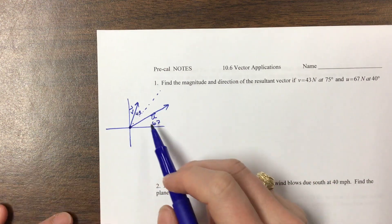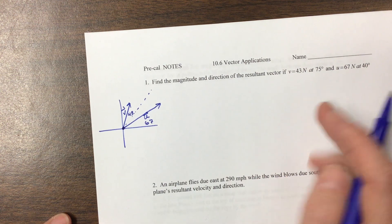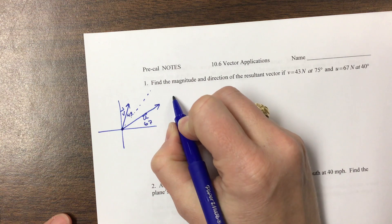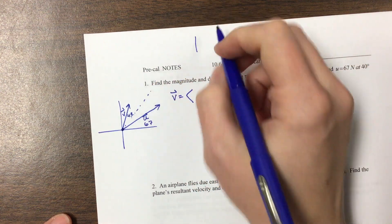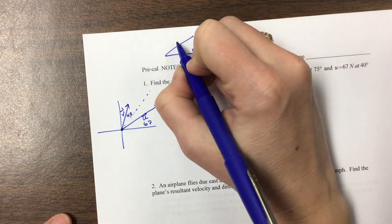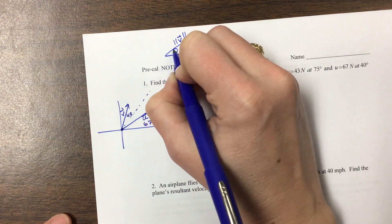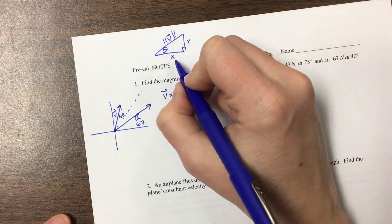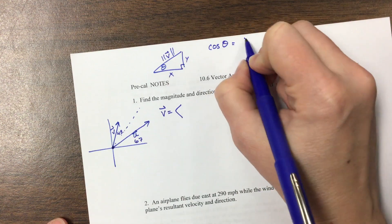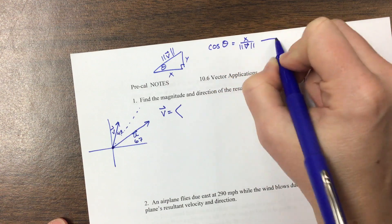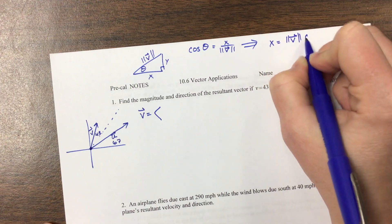And we're going to find that. The easiest way to do this problem is to convert both vectors to their component form and then add the components. So if I use the pre-cal notation vector V, the X value has, if you remember, if this is our magnitude, so the magnitude of V, and this is the X, and this is the Y, and this is our direction, then we know that cosine of theta is equal to X over the magnitude of V. Therefore, that implies that X is equal to the magnitude of V times cosine of theta.